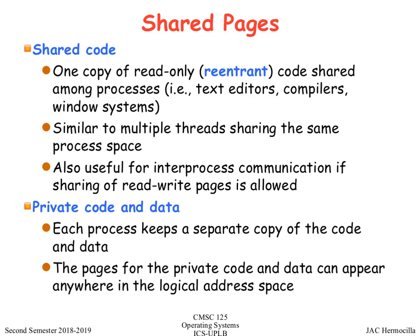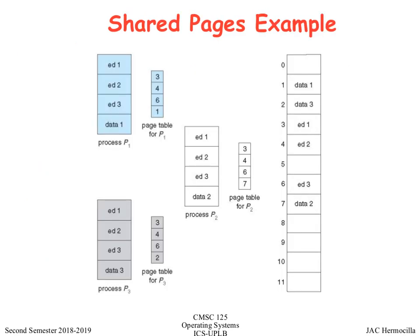Shared pages allows you to share data. When a process is running — for example, you have a text editor — and you have 3 users connected to a remote system all using Vim. In the physical memory, you only have one instance of the Vim process located in certain frames. What is unique for each process will be the data being edited — one is editing a C program, another a JavaScript program, another something else — but the code is the same.